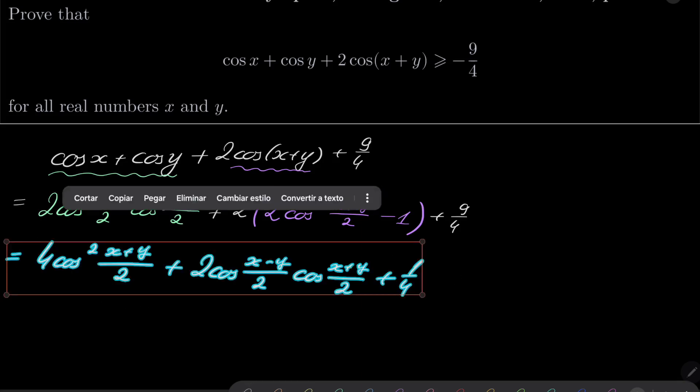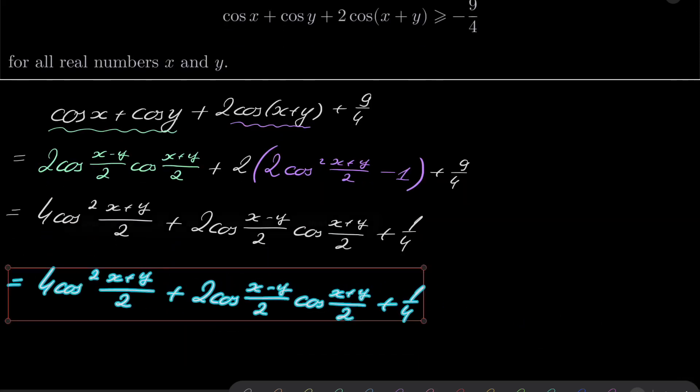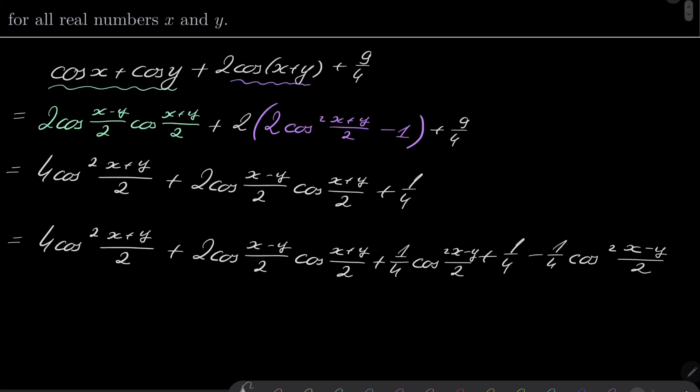Alright, and now what I will do: I will take the very same line and introduce two terms in the middle. Namely, I will add 1 fourth cosine squared of (x minus y) over 2, and I will subtract it - minus cosine squared of (x minus y) over 2.